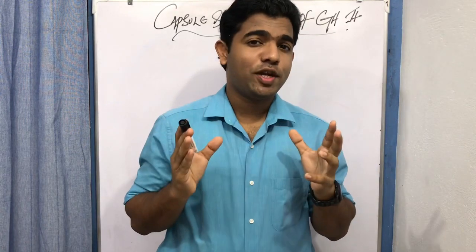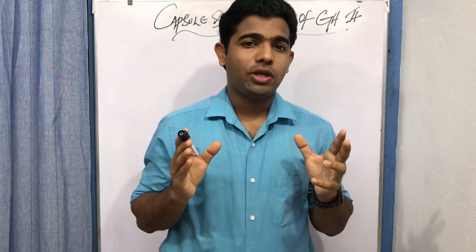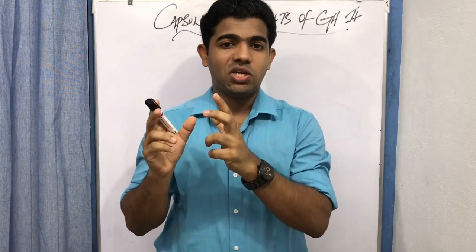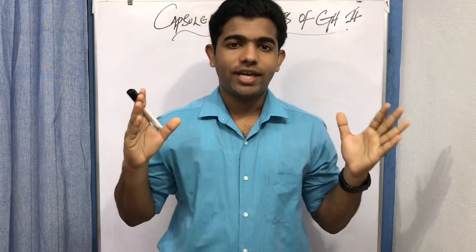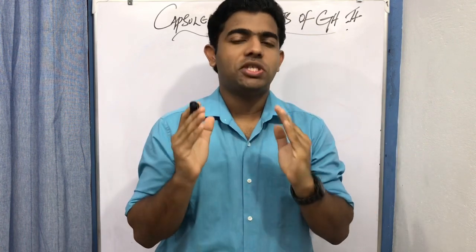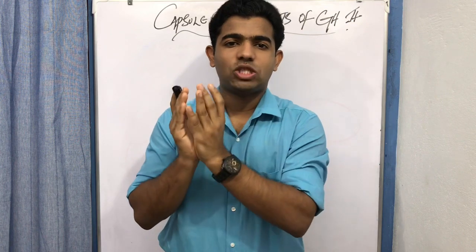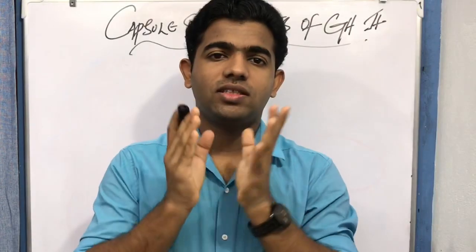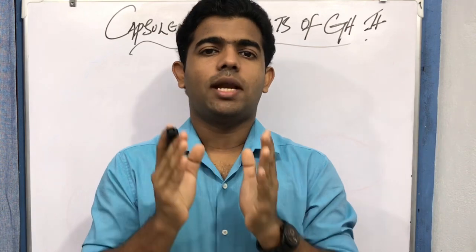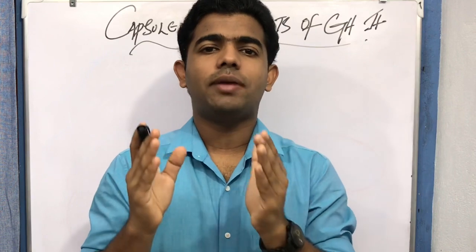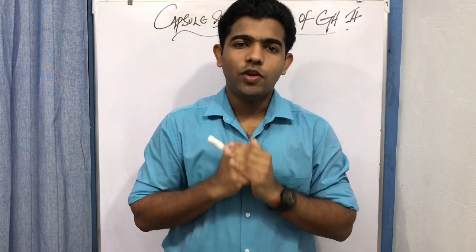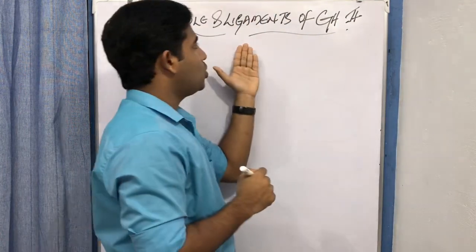Welcome back. In this video we are going to continue our discussion on the glenohumeral joint, covering the accessory structures. This is part two — in part one we already discussed the articular surface, labrum, etc. Now we focus on the capsule and ligaments of the glenohumeral joint.